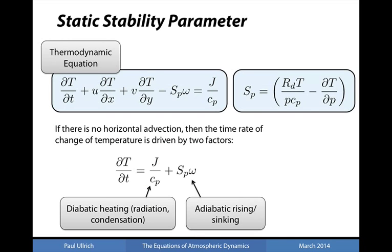This is our new thermodynamic equation paired with the definition of the static stability parameter. Note that if there is no horizontal advection, the time rate of change of temperature at a fixed Eulerian location is simply driven by two factors: diabatic heating — corresponding to radiation, condensation, and other irreversible localized heating — and adiabatic rising and sinking, corresponding to reversible work performed on the fluid parcel leading to changes in its volume.